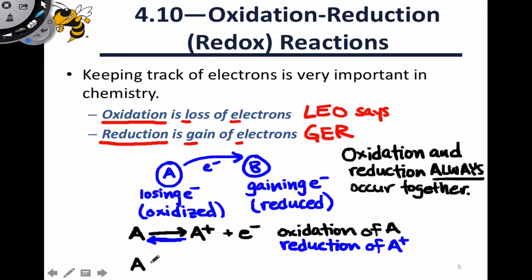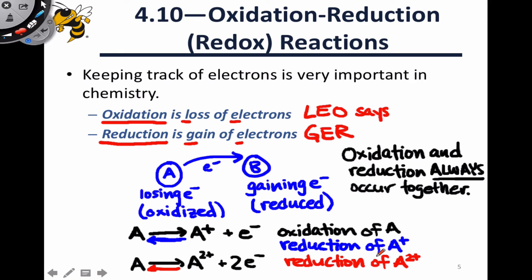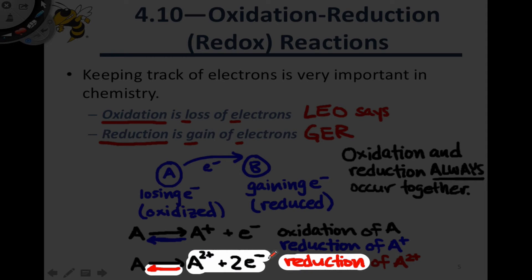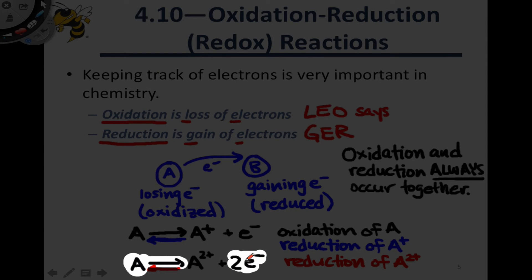This type of process can also occur with multiple electrons. For example, a neutral species A can undergo oxidation to release two electrons to form A²+ and two electrons. This is still an oxidation of A. The reverse direction is a reduction of A²+. In general, if you see electrons as a reactant in a half-reaction, that corresponds to a reduction, since the electrons are being incorporated into the other reactant. If you see electrons as a product, that indicates an oxidation half-reaction, as the reactant is giving up electrons as the process goes forward.